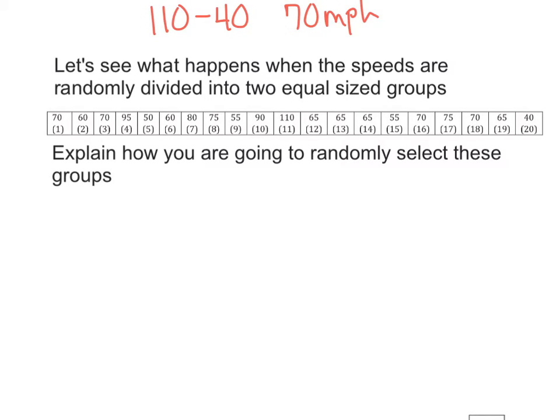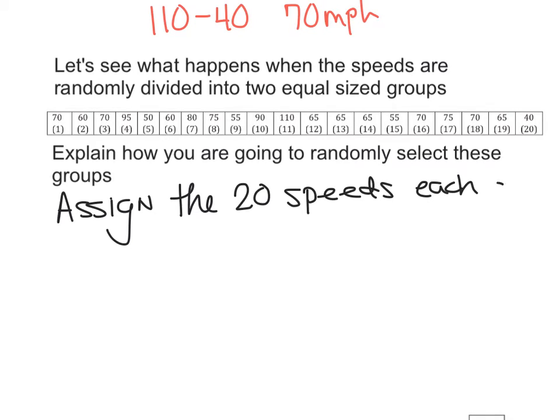Well, remember, you first have to assign groups. Okay, so I'm going to assign, and this is what needs to be written out, and you need to be able to regurgitate something very similar. I need to assign the 20 speeds, each a number from 01 to 20. Would you agree that would cover all 20 numbers? So this is 01, 02, 03, 04, 05, etc. through 20.